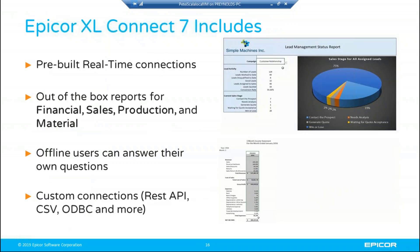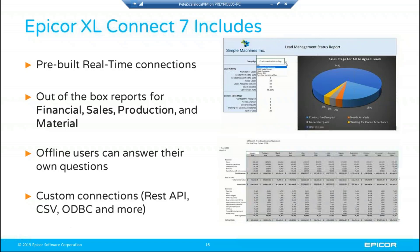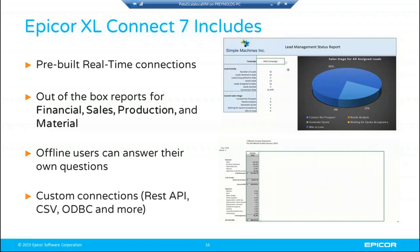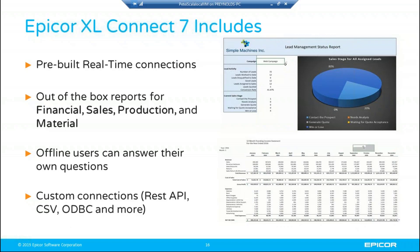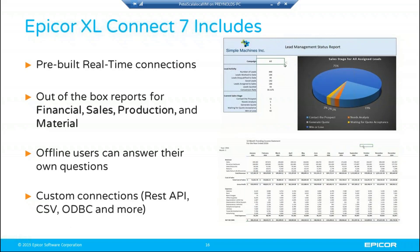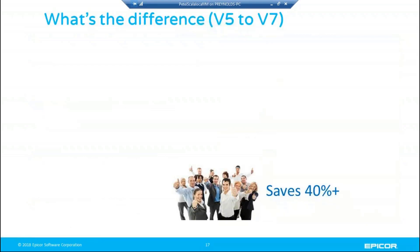Here's what comes out of the box with the Excel Connect platform. We provide real-time connectors for live users. In the past we were limited to just financials, but now we have more than 150 pre-built connections and provide 45 out-of-the-box reports to help get started. You can work offline without a direct database connection. And now every user has the ability to add custom connections — there's no additional cost for a development tool, it's part of the product platform.